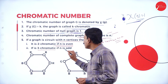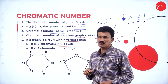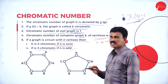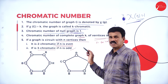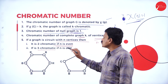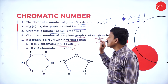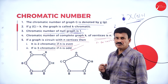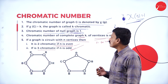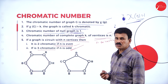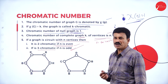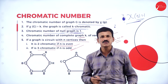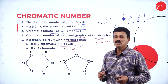If it is 3-chromatic that means n is an odd number. If n is even, then it is called 2-chromatic. If n is odd, then it is called 3-chromatic. Depending upon the odd or even number, we write it as even chromatic or odd chromatic.